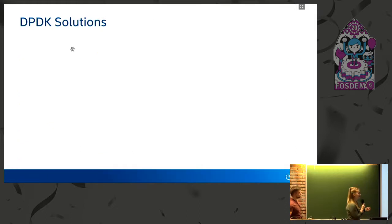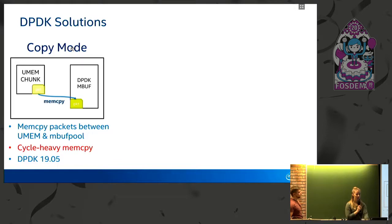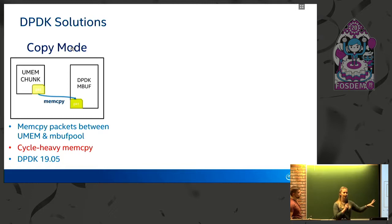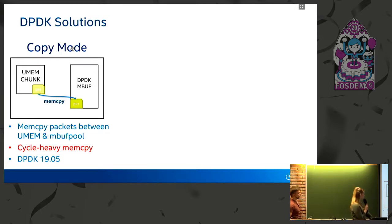To get around this, the DPDK community came up with a number of solutions, each with varying degrees of performance success. The first solution considered was copy mode: allocate memory for the umem and also allocate the DPDK mbuf pool as normal, then simply memcopy between the two locations in memory. This works well but performance is not ideal due to the cycle cost of the memcopy being high. It made it into DPDK release 19.05 as part of the series that initially introduced AF_XDP support.